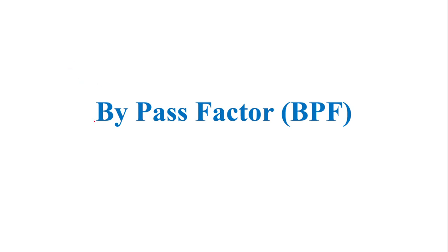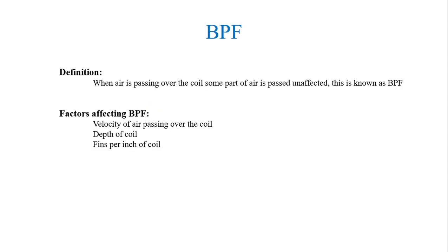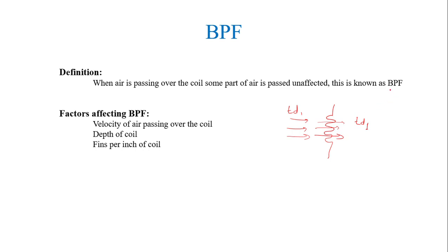In this video we are going to study the bypass factor. The bypass factor is the factor when air is passing over the coil and some part of the air passes unaffected. Assume you have a coil and air is passing over it at temperature td1. When it passes over the coil, a small amount of air remains unaffected and comes out still at temperature td1. That unaffected air is what defines the bypass factor.